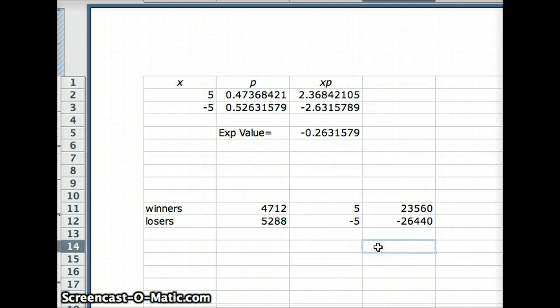On average, how much did we lose altogether? We lost 2,880. Our average loss would equal 2880 divided by 10,000 games. Our average loss was 28.8 cents per game when I expected to lose 26.3 cents per game.